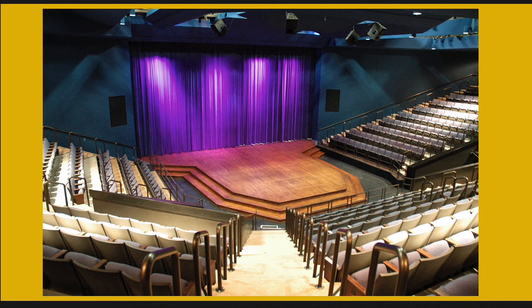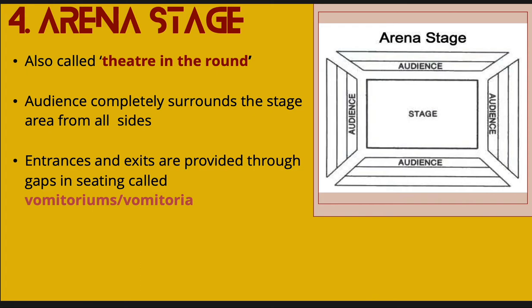This is another thrust or three-quarter round stage, and this particular one has a grand curtain, though not all of them do. Finally, our fourth stage type is the arena stage, also called theater in the round. Sometimes arena staging is in a circular format, but it can also be more or less rectangular. The audience completely surrounds the stage from all sides. The entrances and exits are provided through gaps in the seating called vomitoria or vomitoriums — which actually has nothing to do with vomit, contrary to popular belief. It borrows that design from places like the Coliseum in Rome.